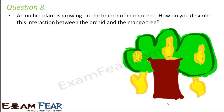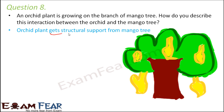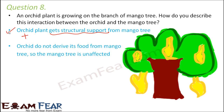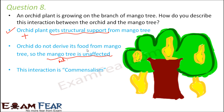Question number 8: an orchid plant is growing on the branch of a mango tree. How do you describe this interaction between the orchid and the mango tree? The orchid plant gets structural support from the mango tree, so the orchid is benefited. But the mango tree remains unaffected. In a relationship where one organism is benefited while the other is not affected at all, it is termed commensalism. So this is an example of commensalism.